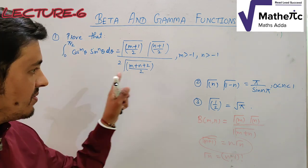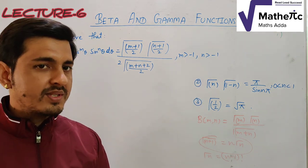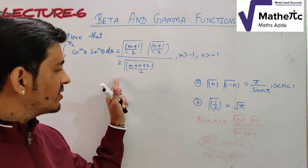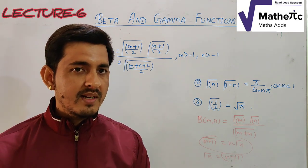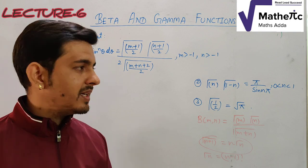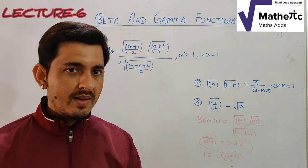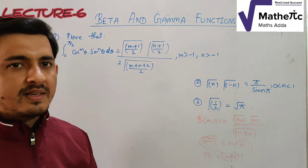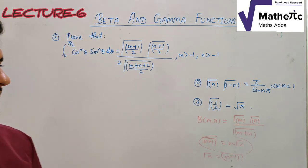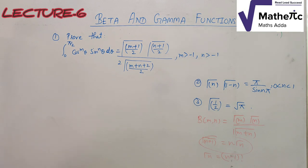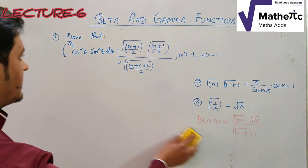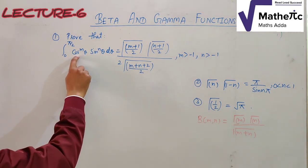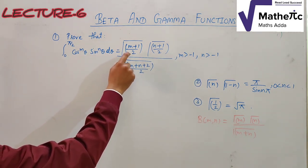Today we will prove three important results. These are frequently asked in exams — both as proofs and as formulas used in numerical problems. Let's start with the first question: evaluate the integral from 0 to π/2 of cosᵐθ · sinⁿθ dθ.